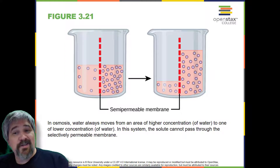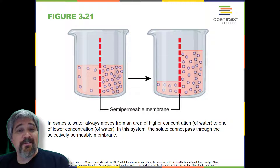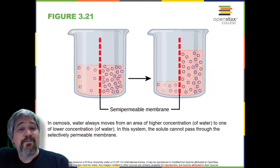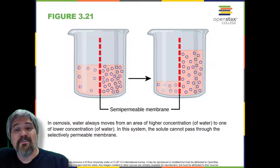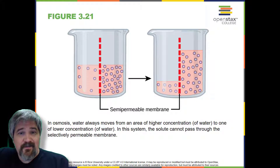Water has a concentration gradient in this system. Therefore, water will diffuse down its concentration gradient, crossing the membrane to the side where it is less concentrated. This diffusion of water through the membrane — osmosis — will continue until the concentration gradient of water goes to zero. Osmosis proceeds constantly in living systems.